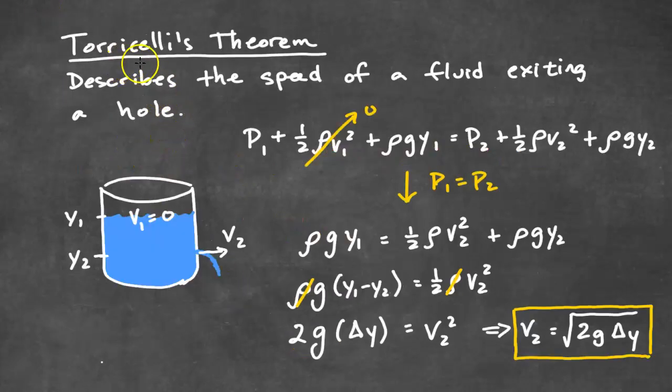Now we're going to take a look at Torricelli's theorem, which describes the speed of a fluid exiting a hole. Here we have a container of fluid. Notice that there's a hole at the bottom, and we want to find out the speed of the fluid that's flowing out through this hole. We're going to set the top of the fluid as location of position Y1, and then the location, the depth of the hole is going to be Y2.